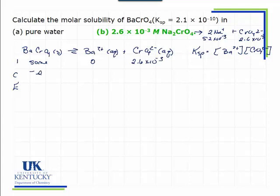Once again, some of this will dissolve, forming barium ions and chromate ions. Since very little dissolves, we still would have some left as a solid. We would have an S here, and we have 2.6 times 10 to the minus 3 plus S.